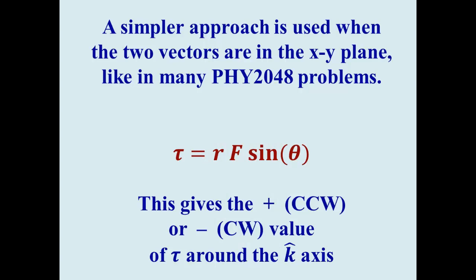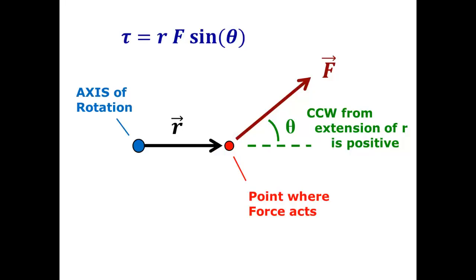In that kind of situation, where the vectors are in the XY plane, we don't have to use all of the unit vectors. Instead, we can just use a geometrical relationship involving the magnitude of R, the magnitude of F, and the sine of the angle between them. As long as we define the angle correctly, this will also give us both the magnitude and the direction of the torque measured around the K hat axis, that is, around the Z axis, perpendicular to the plane of the forces.